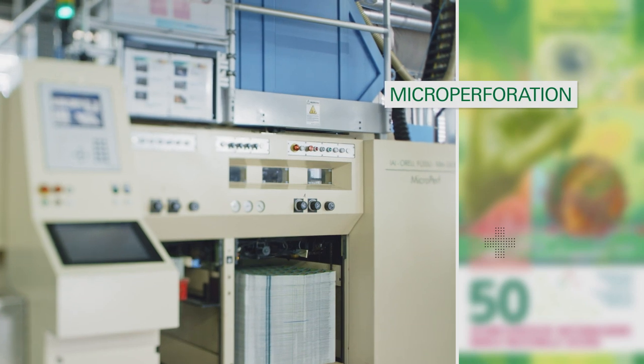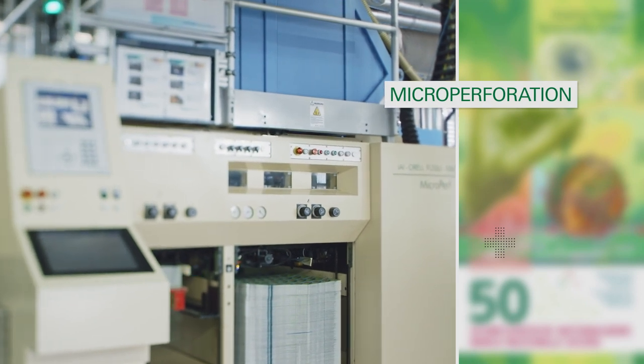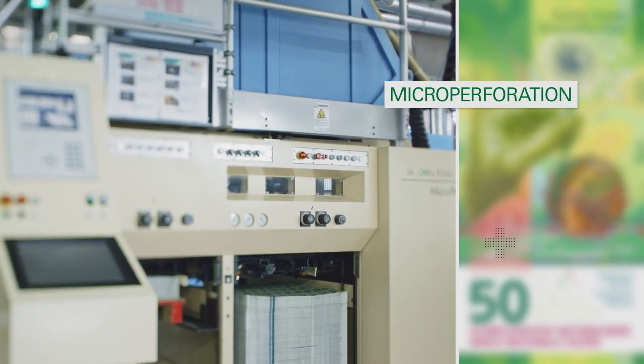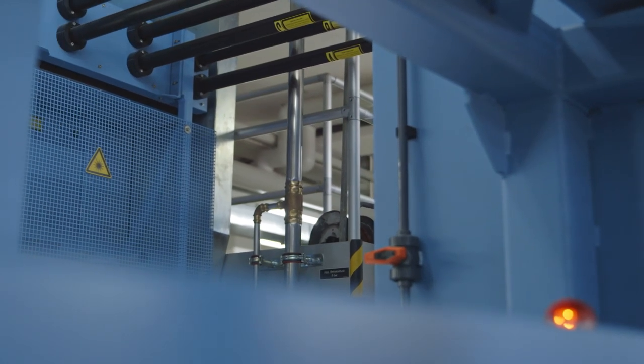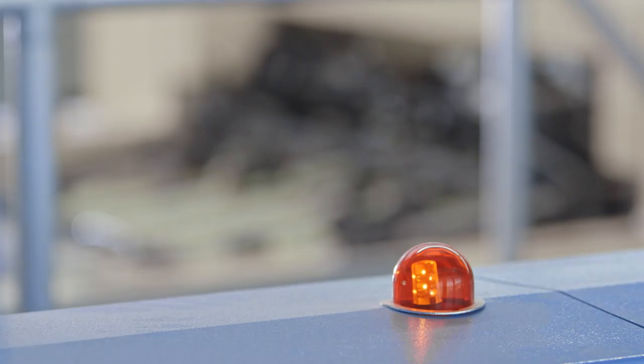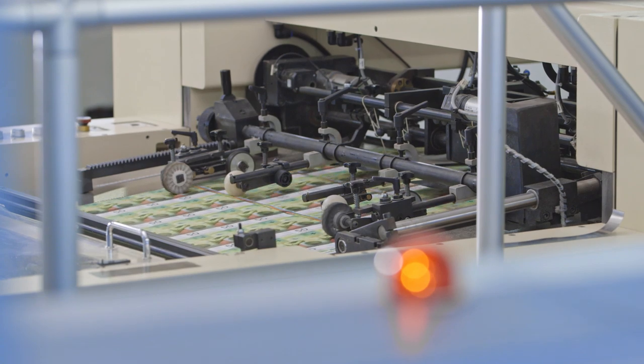The micro-perforation unit is used to add a further security feature. A powerful laser burns tiny holes into the printed paper. If you hold the note up to the light, you can clearly see the perforations in the shape of a Swiss cross.